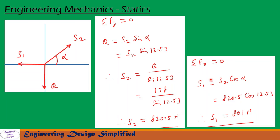Similarly, let us resolve forces along the X direction. Along X, we have S1 acting in this direction and the horizontal component of S2, which is S2 cos alpha. Q has no horizontal component since it is vertically downwards. So S1 equals S2 cos alpha. We have calculated S2 as 820.5 N. After substituting S2 and alpha values and simplification, we get S1 equal to 801 Newton.